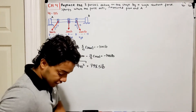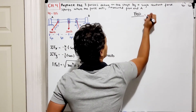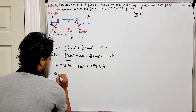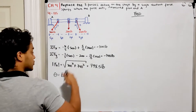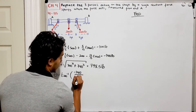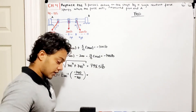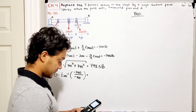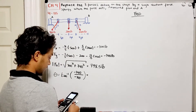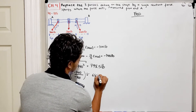Now I need to find the angle of the resultant force. The angle is the inverse tangent of 740 divided by 300, since those are the y and x components. This gives us 67.9 degrees, which we approximate to 68 degrees.